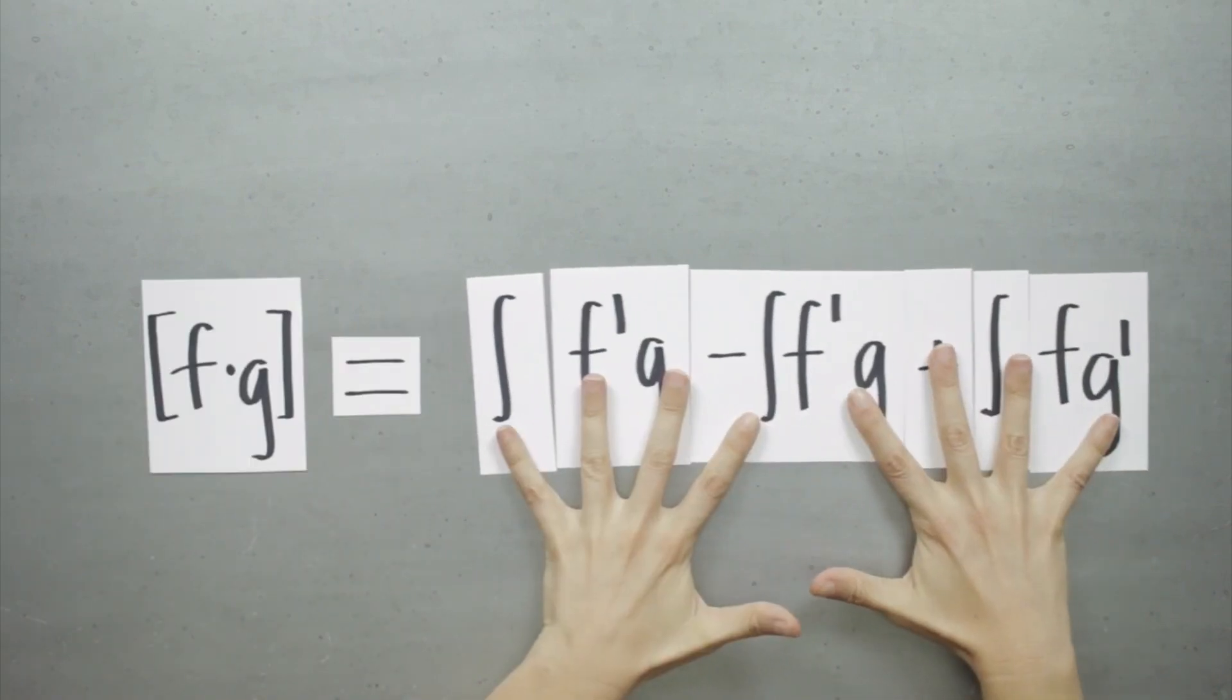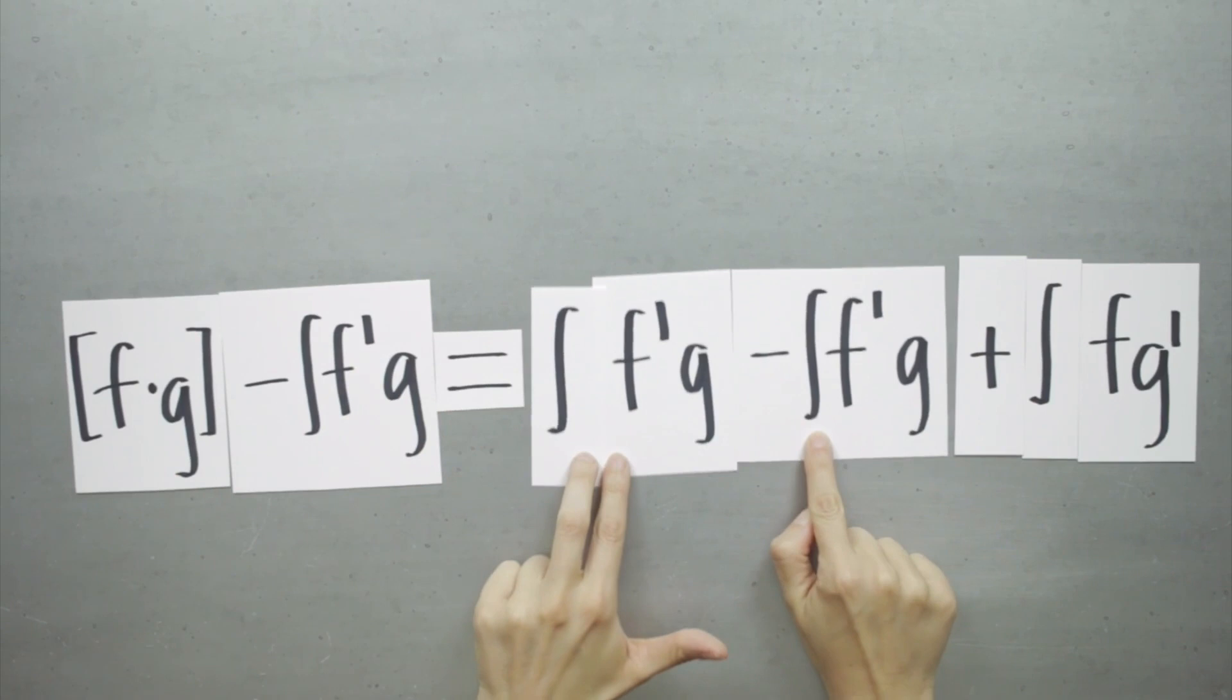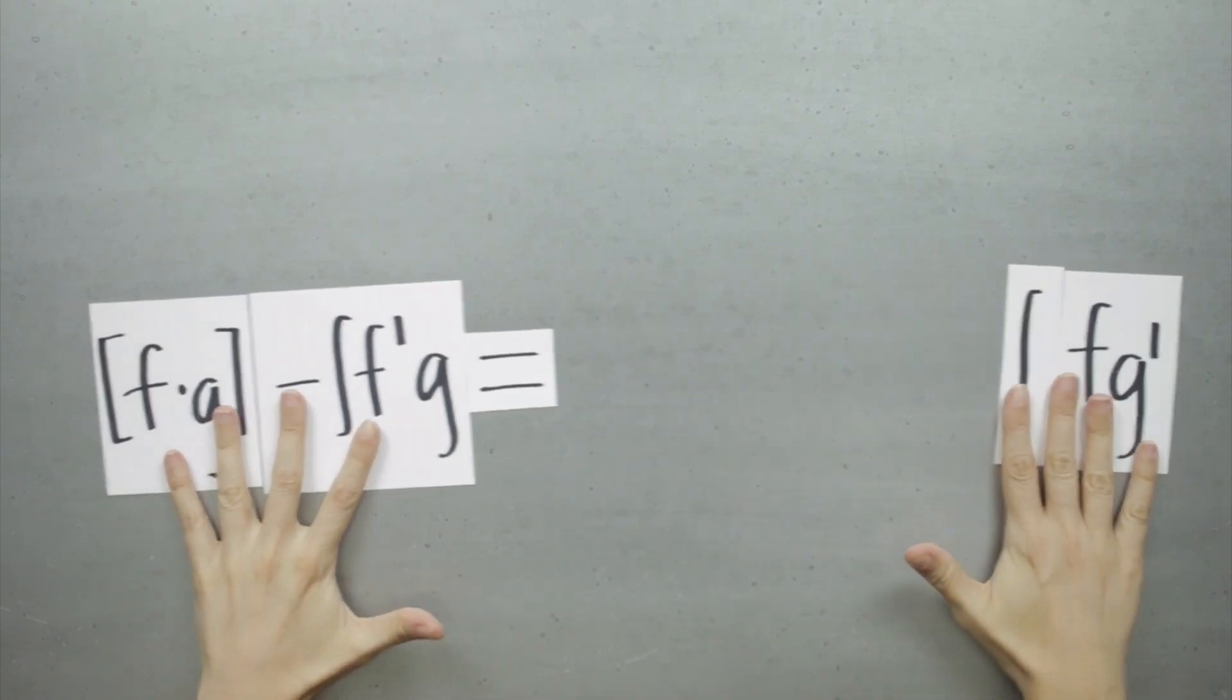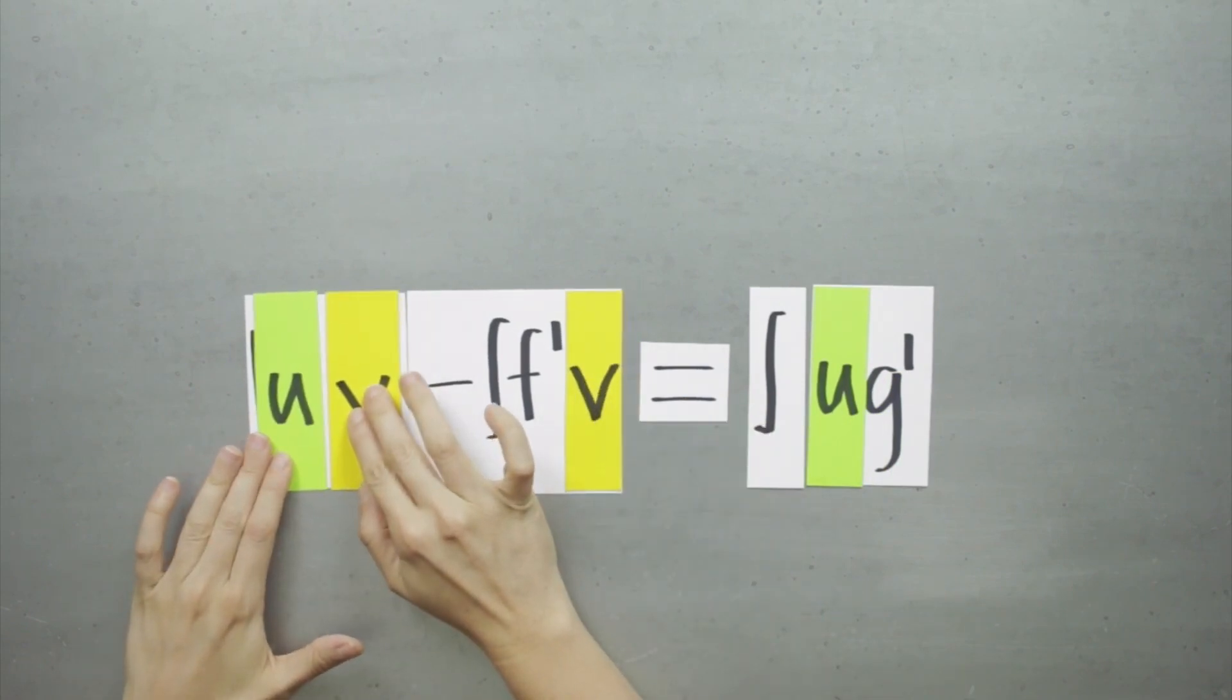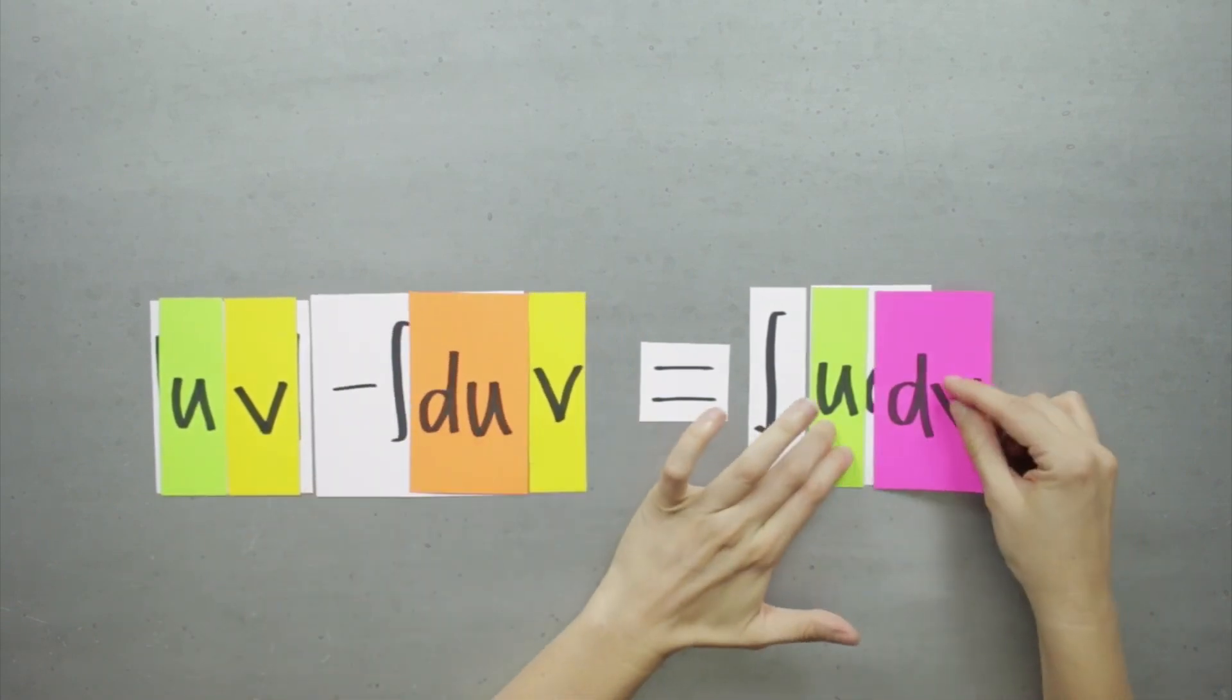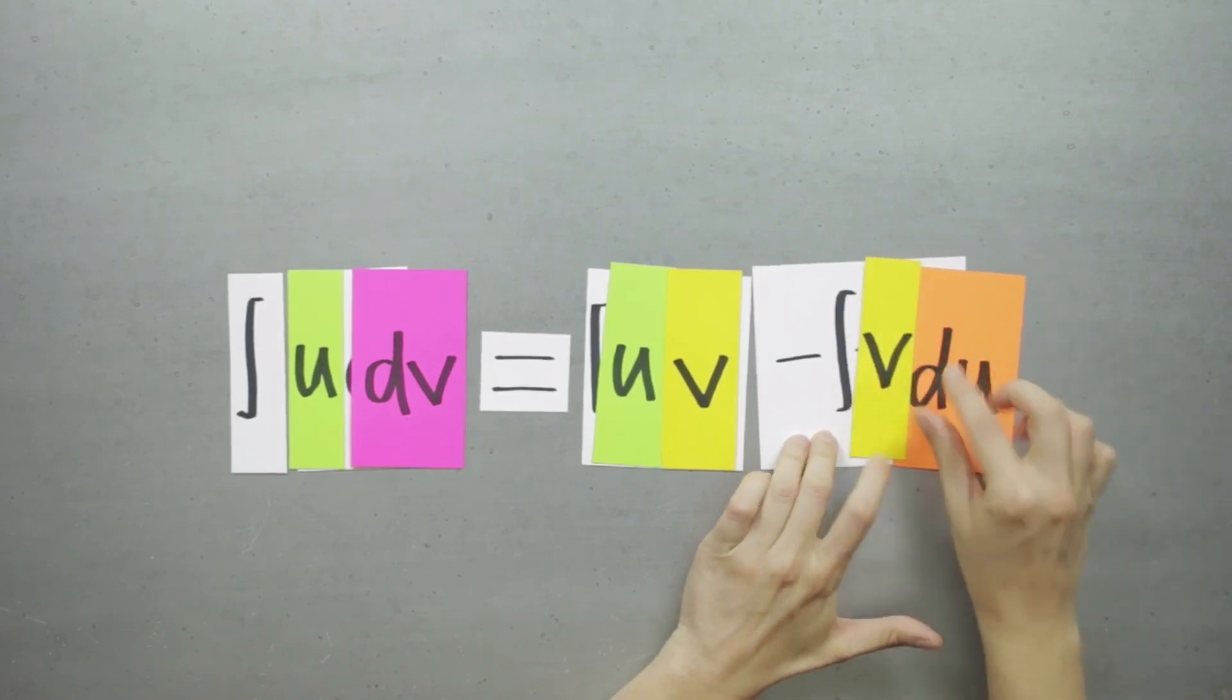Now we subtract this first integral from both sides. And just like that, we've got the integration by parts formula. We don't usually write it this way, but if we say that f is u and that g is v, then we can replace f with u and g with v and then replace f' with du and g' with dv. Then we'll just rearrange slightly, and this is what we recognize as the typical integration by parts formula.